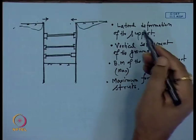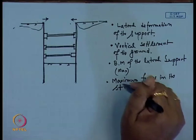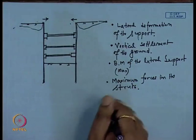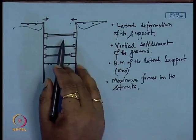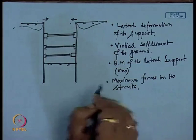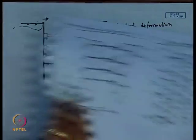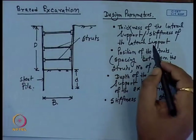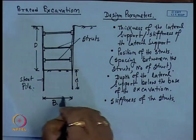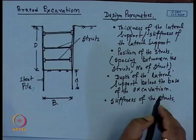Lateral deformation of the support should be within permissible limit. Vertical settlement of the ground should be within permissible limit. We also need to check the maximum bending moment of the lateral support and the maximum force acting in the struts. Based on these checks, we decide the design parameters: stiffness of lateral support, position of struts, depth of lateral support below excavation base, and stiffness of struts.